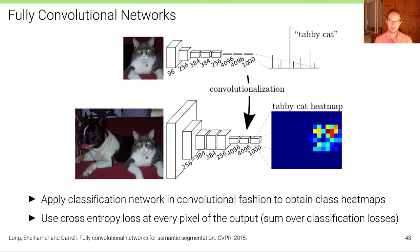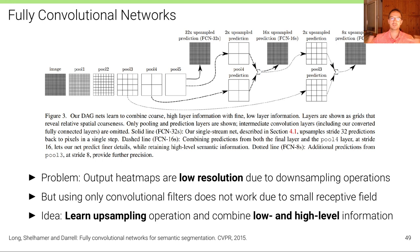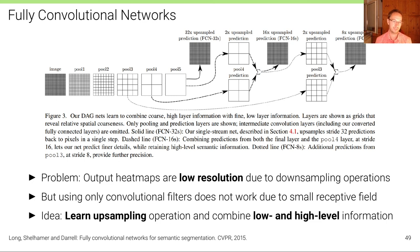The problem is that the output heat maps are really low resolution due to all the downsampling that takes place in the neural network to achieve a large receptive field, which is necessary to recognize objects. However, using only convolutional filters without any downsampling doesn't work in practice due to the small receptive field — you'd need hundreds of layers to get the same large receptive field that a few max pooling operations provide. The number of parameters is too large; this simply doesn't work.